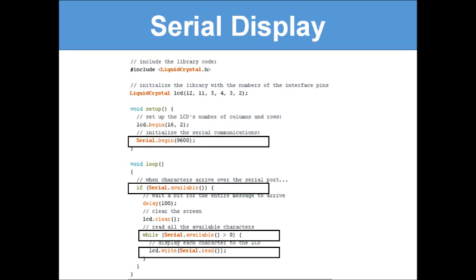In the void loop, you write: `if (Serial.available())`, then delay 100ms to wait for the entire message to arrive, clear the screen, and then read all available characters with `while (Serial.available() > 0)` — display each character to the LCD using `lcd.write(Serial.read())`. This writes to the LCD whatever was entered in the Serial Monitor.